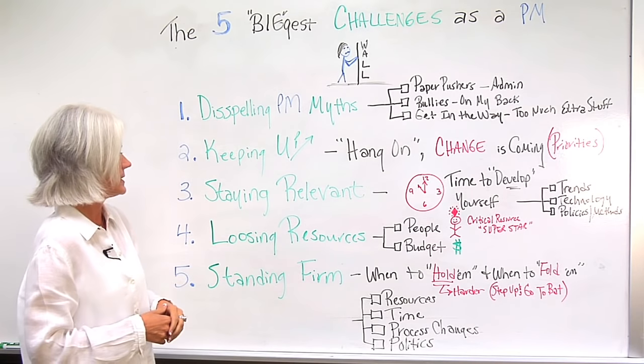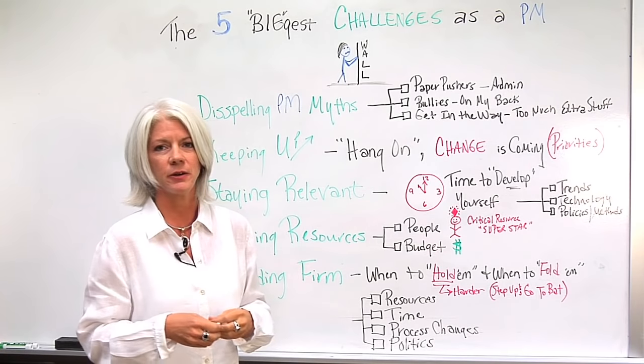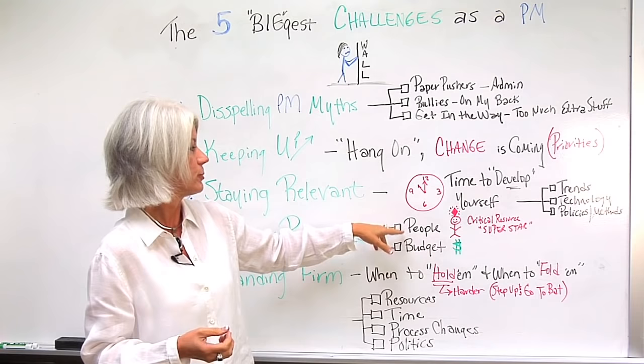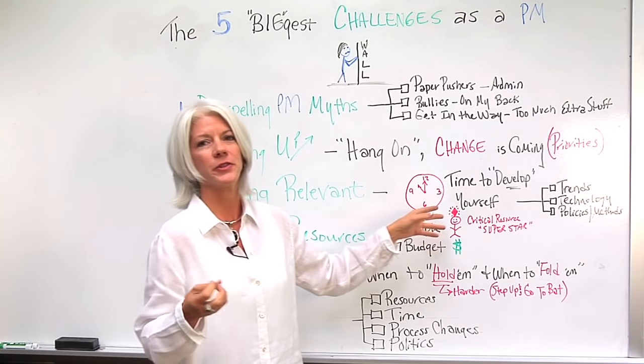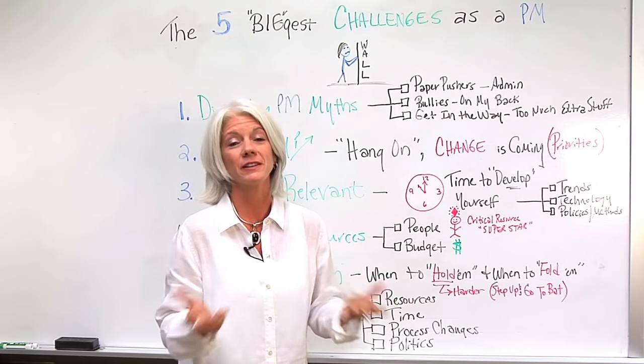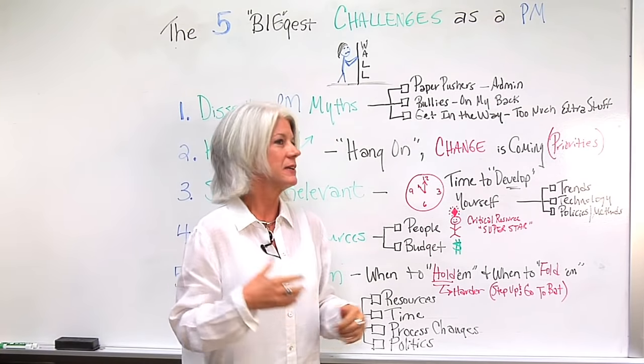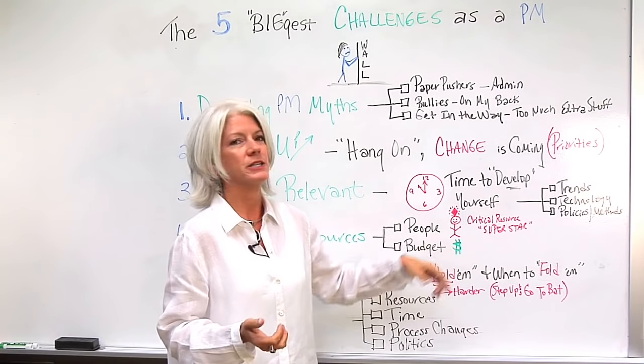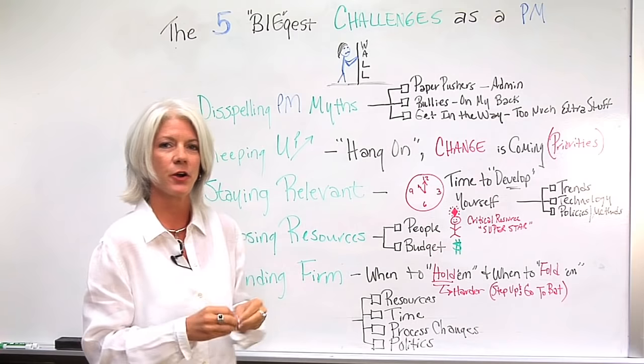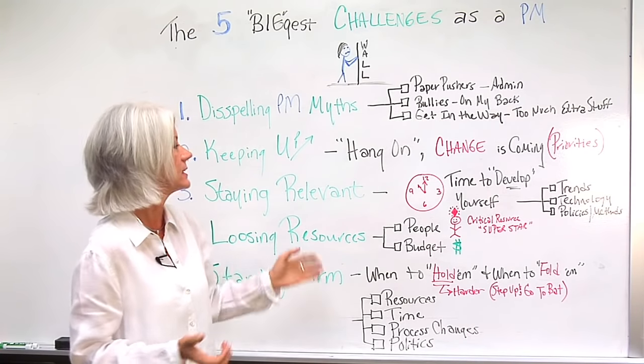Number four is losing resources. As things change and there are higher priority projects, invariably you lose your people or your budget. The critical resource, the superstar on your project that you fear, oh my God, if I lose that person, I am dead in the water. Well, typically we do. And then the budget gets reallocated to other projects. Therefore, you have to go back, reprioritize your work, change it and that's constantly happening.